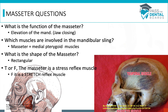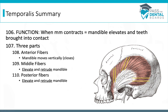Let's move on to the temporalis — the big muscle that runs up the side of the head. The function of this muscle when it contracts is to close the mouth, but they can get more specific based on which part of the muscle contracts. We can break this muscle into three parts: the anterior fibers go up and down, the middle fibers go more slanted backwards, and the posterior fibers run more horizontally.